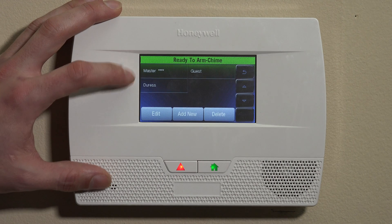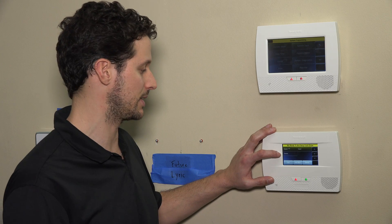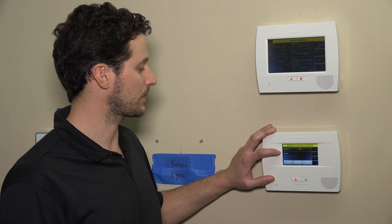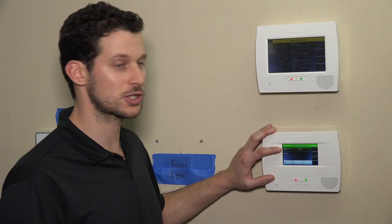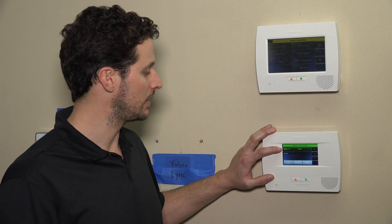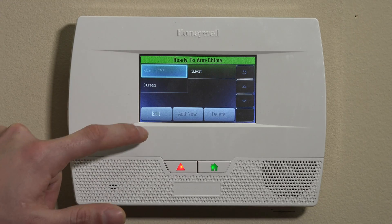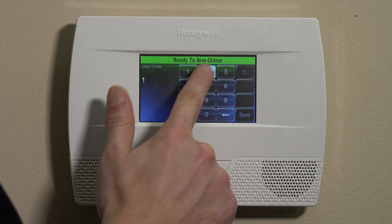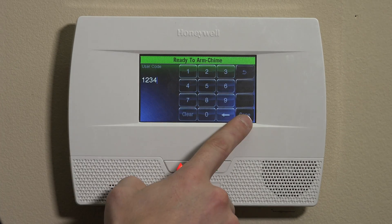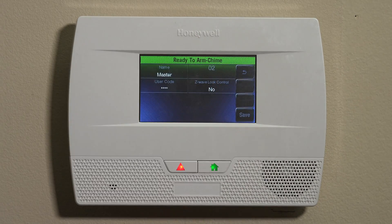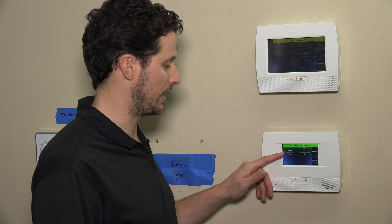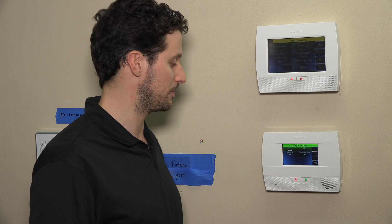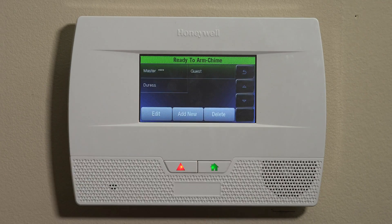We'll have master, guest, and duress codes already listed here. The master code by default is 1234. The first thing we should do is go into Master and then click Edit, User Code, and then we can enter a new master code. Enter whatever 4-digit code you like. For today, I'm just going to keep it on default, 1234. We'll click Done, and then we have the master code set. We'll go ahead and hit Save.